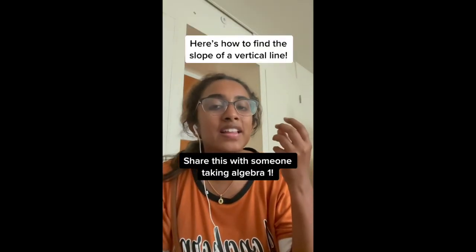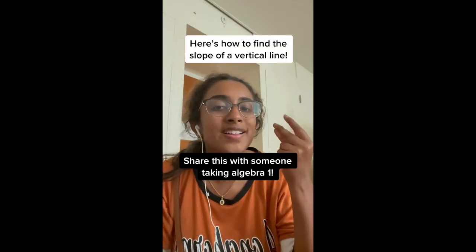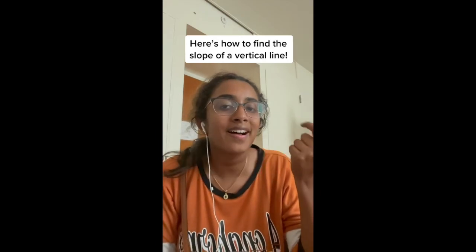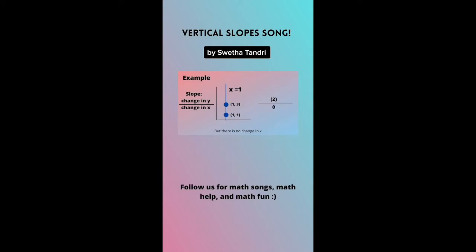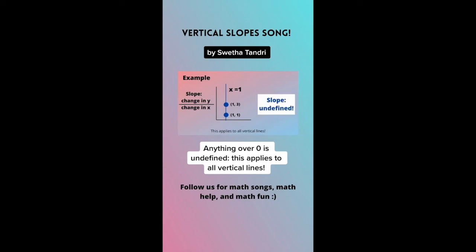Here's how to find the slope of a vertical line. For vertical lines, a change in y exists, but there is no change in x. Anything over zero is undefined — this applies to all vertical lines.